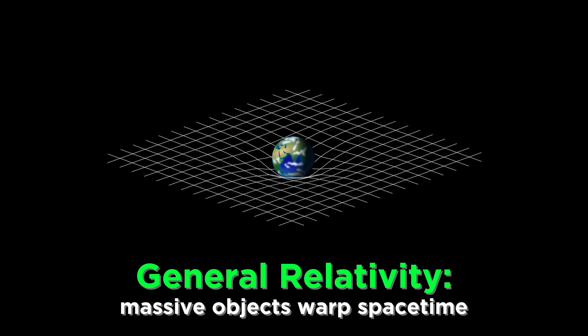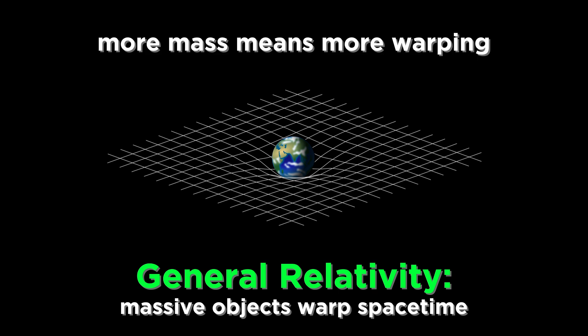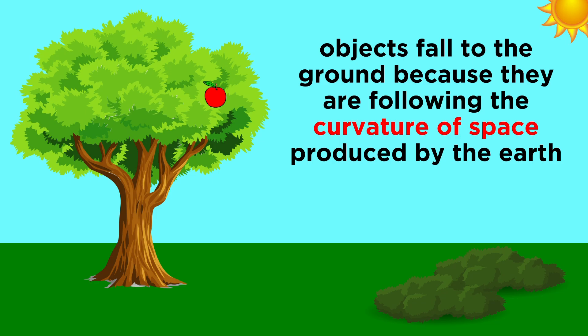As we may remember, general relativity tells us that massive objects warp spacetime, and the greater the mass, the more pronounced the influence. This is why objects fall down from the sky to the ground. They are simply following the curvature of space that is produced by the mass of the very nearby Earth.